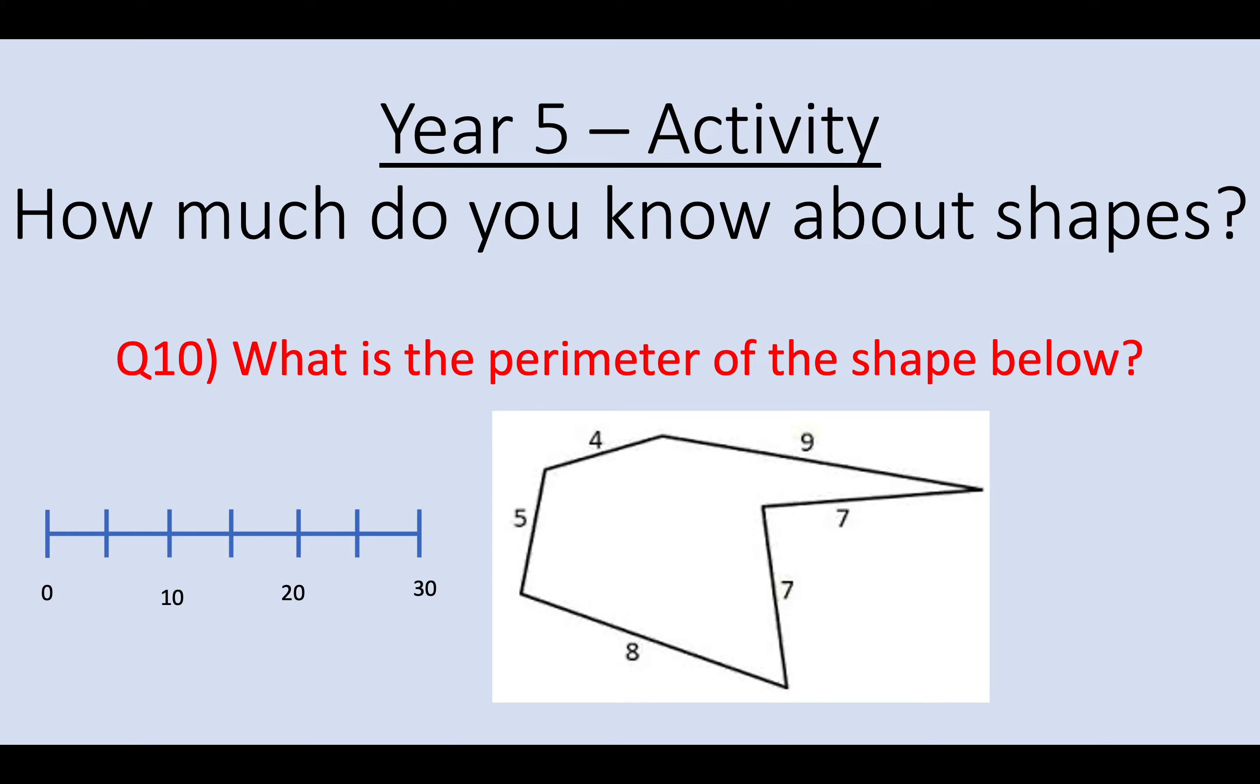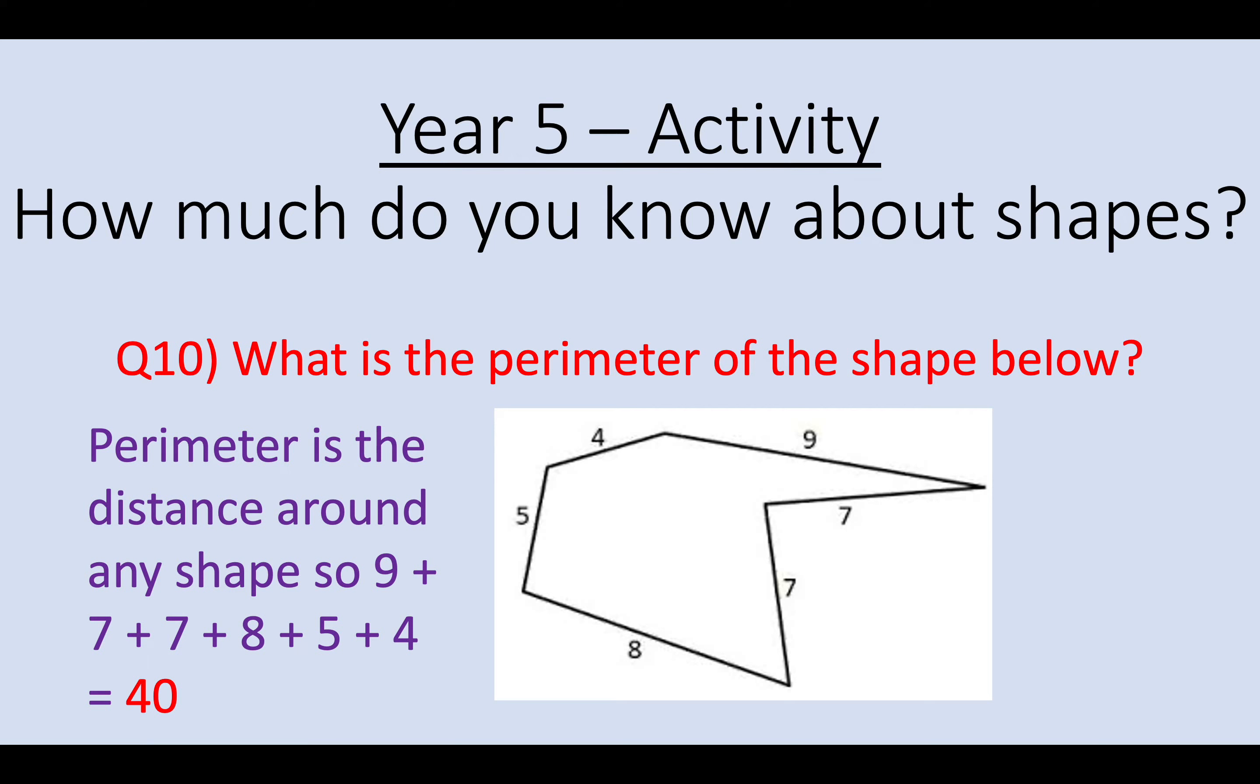Question 10. What is the perimeter of the shape below? Okay. So the perimeter is the distance around the outside of any shape. So for this shape I have to add up all the lengths of the sides. So 9, add 7, add 7, add 8, add 5, add 4 means that the perimeter of this shape is 40. So question 10, your answer is 40.